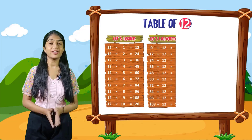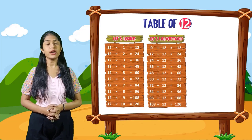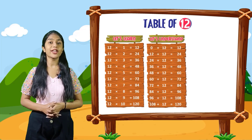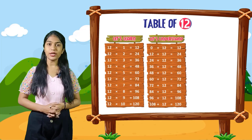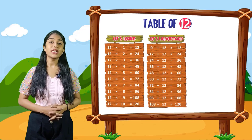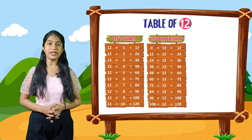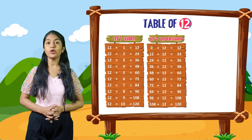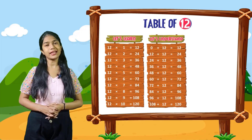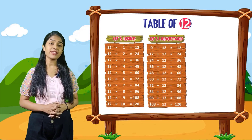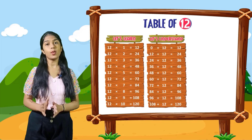So now let's understand. 0 plus 12 is equal to 12. 12 plus 12 is equal to 24. 24 plus 12 is equal to 36. 36 plus 12 is equal to 48. 48 plus 12 is equal to 60. 60 plus 12 is equal to 72. 72 plus 12 is equal to 84. 84 plus 12 is equal to 96. 96 plus 12 is equal to 108. 108 plus 12 is equal to 120.